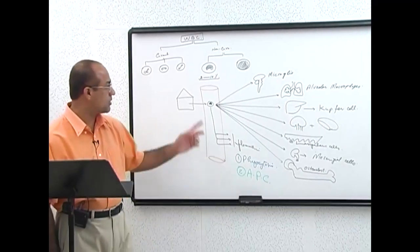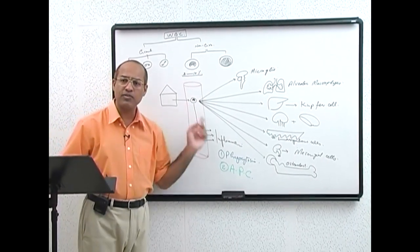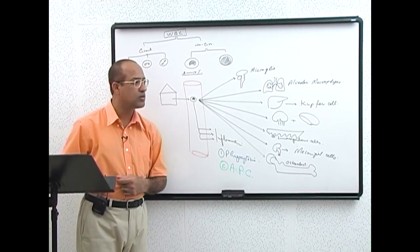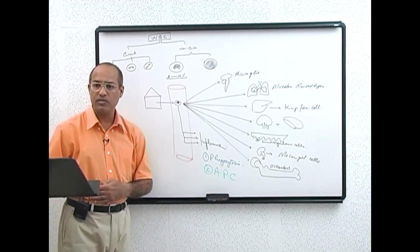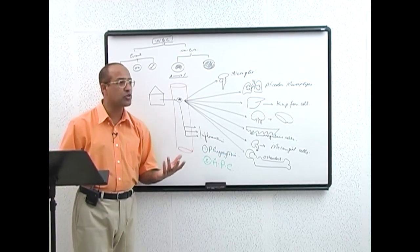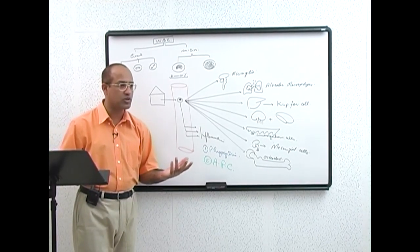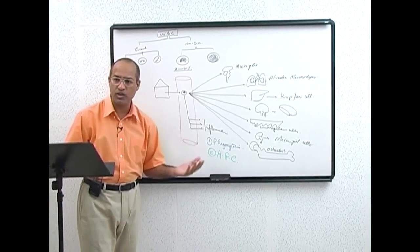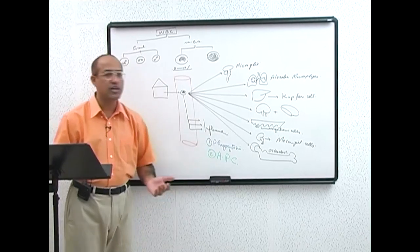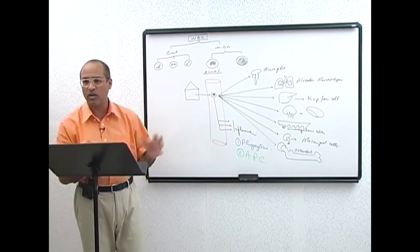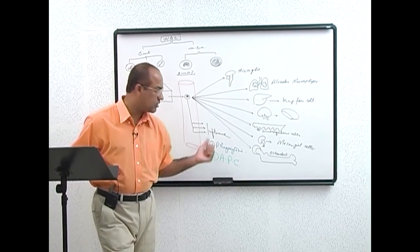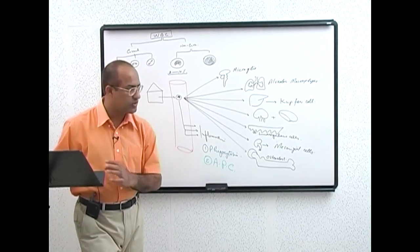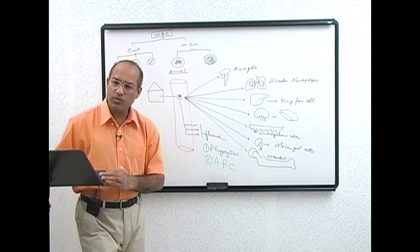Macrophages do have granules — non-specific granules, also called azurophilic granules or primary granules. Simply call them lysosomes, as these are all the same type of granules. These granules are present in monocytes as well.